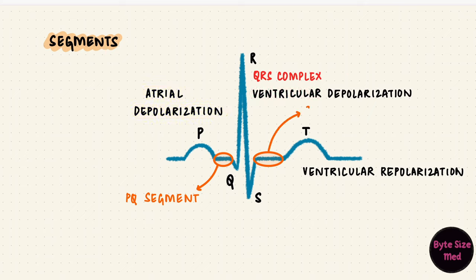An important segment is the ST segment between the end of the S wave and the beginning of the T wave. This corresponds to the plateau of the ventricular action potential, because the T wave is repolarization. And the QRS complex was ventricular depolarization.